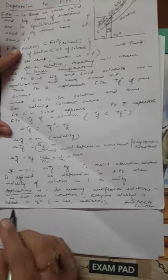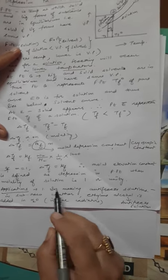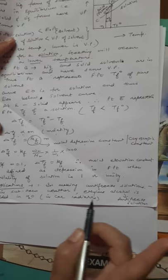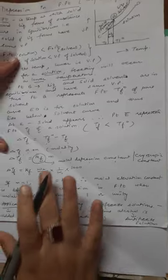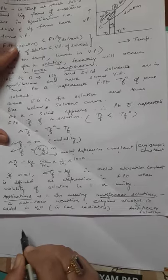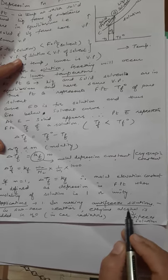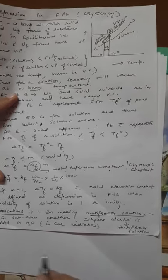Now the main point of importance is, what are the applications of depression in freezing point? There are two main important points to remember. This property is used in making anti-freeze solutions, which are those solutions that decrease the freezing point of ice.